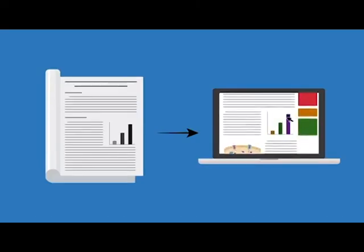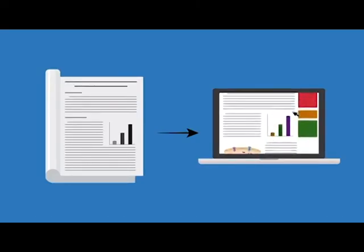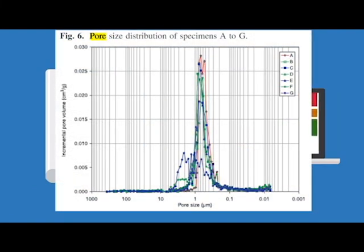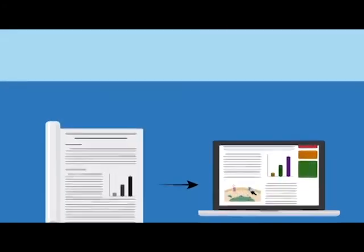According to S.E. Chidiac and L.M. Federico 2007, pore volume decreases with the amount of additive glass in the bricks. The figure shown on screen is the said data for their research.